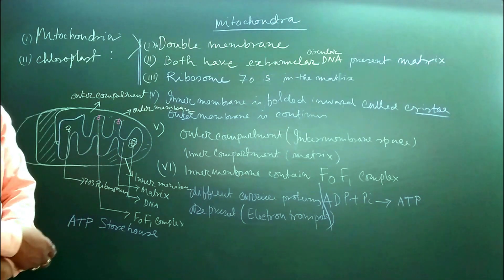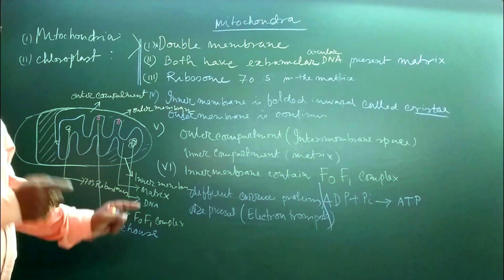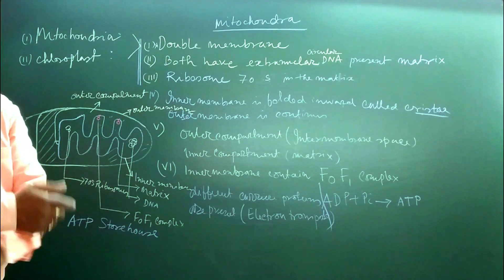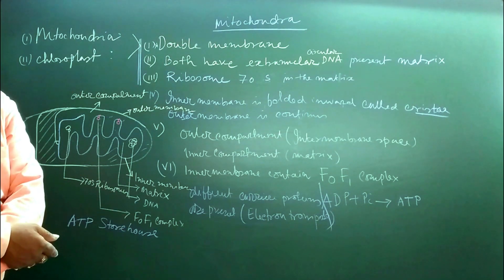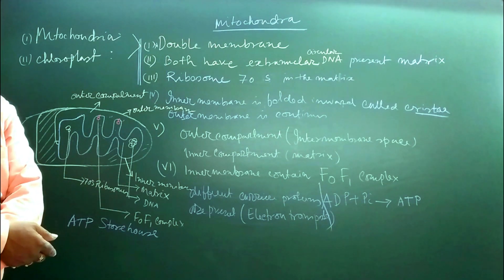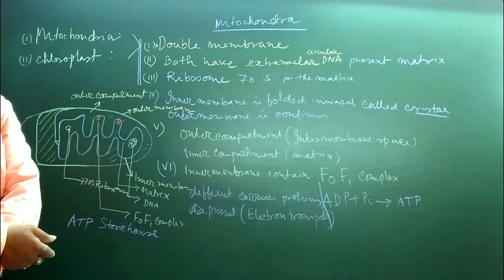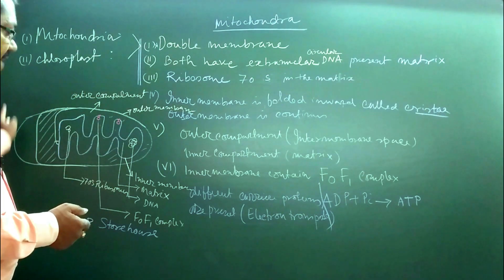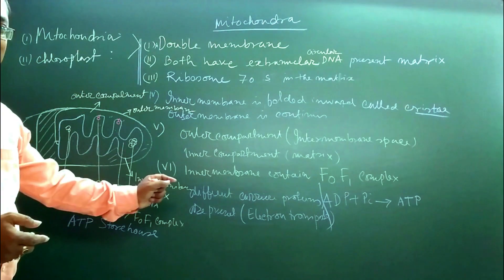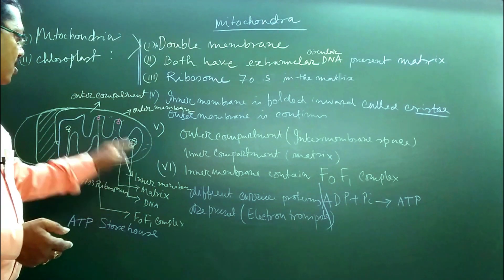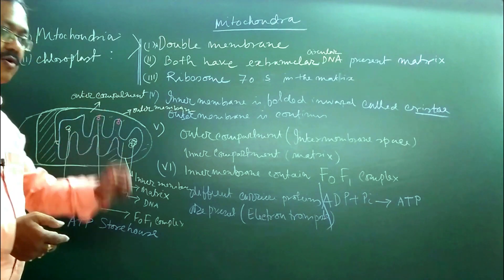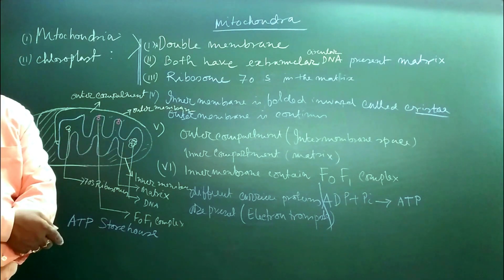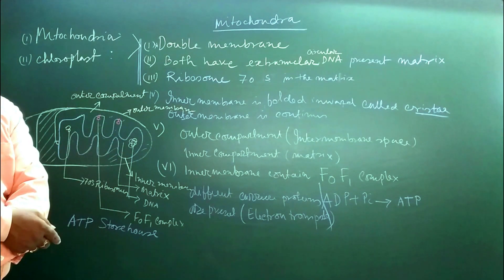Glycolysis, one part of cellular respiration, is performed in the cytoplasm. Within the mitochondria — the mitochondrial matrix — the respiratory pathway, also called the TCA cycle or citric acid cycle (PCA cycle), takes place. The enzymes for all these reactions are present here, functioning in ATP production.